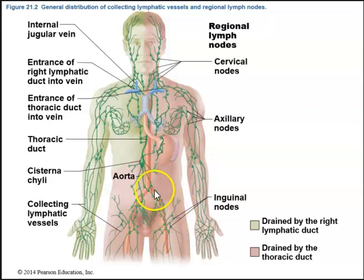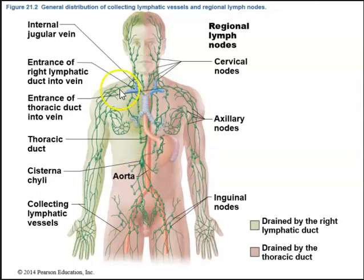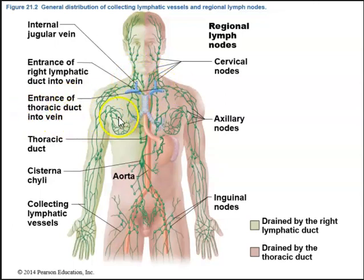We can see all these lymph vessels draining upward into different ducts. On the right side of the body, you have the right lymphatic duct draining into the vein, and on the left you have the thoracic duct draining into the vein, allowing fluid to return back to the right side of the heart.